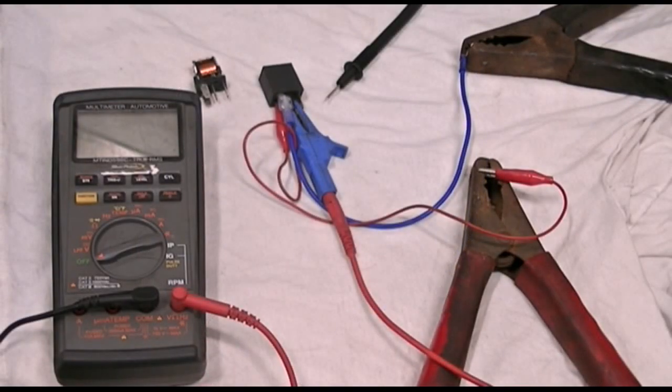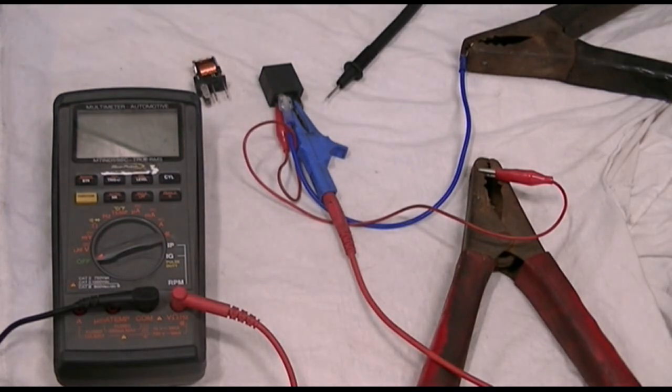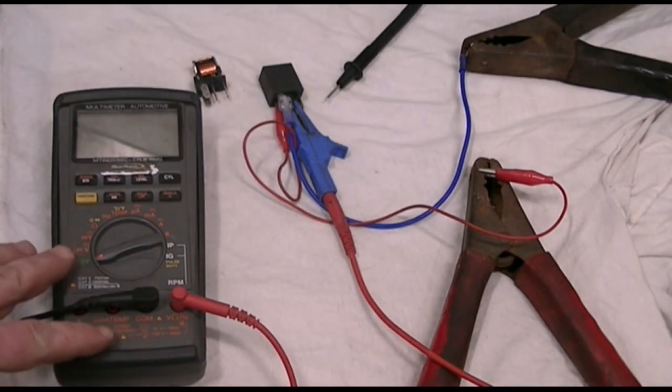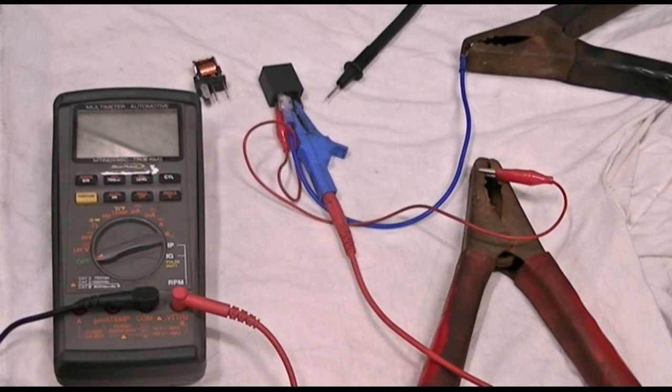Now we're going to test that our relay is working electrically. We're going to take our DVOM, digital volt ohm meter, and set it up for resistance tests.